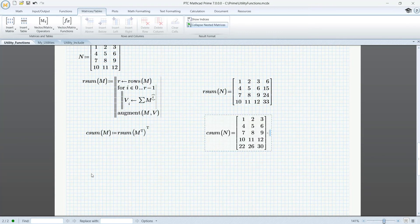N, and finally, to find the row and column sums, R C sum can be defined as R sum of M, and then use C sum on the R sum. Let's check, R C sum of N equals.